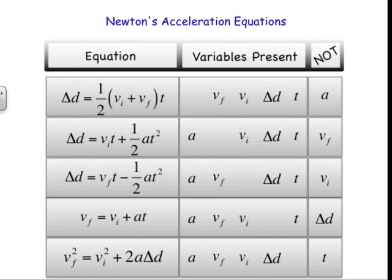To remind you about the chart, any of these equations is going to contain four of five possible variables. The possible variables are acceleration, final velocity, initial velocity, delta d, and time. Delta d being the displacement.